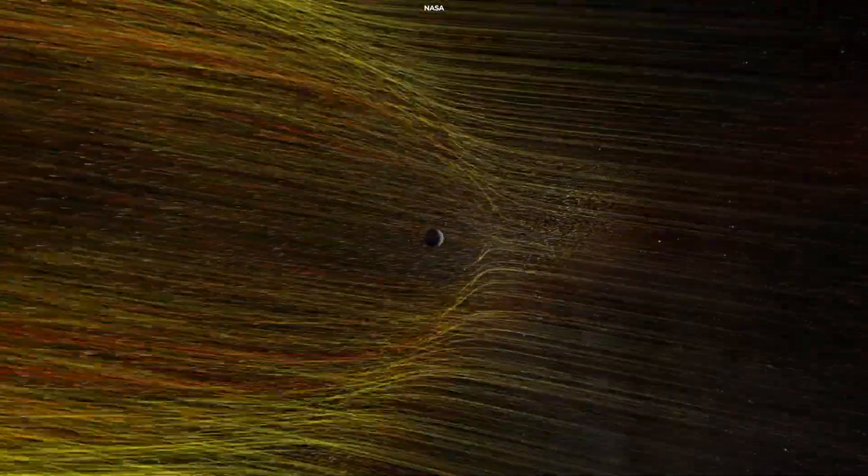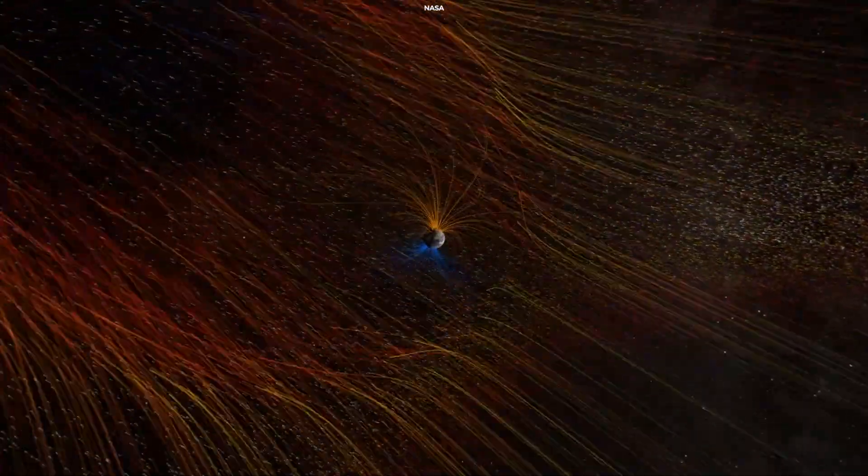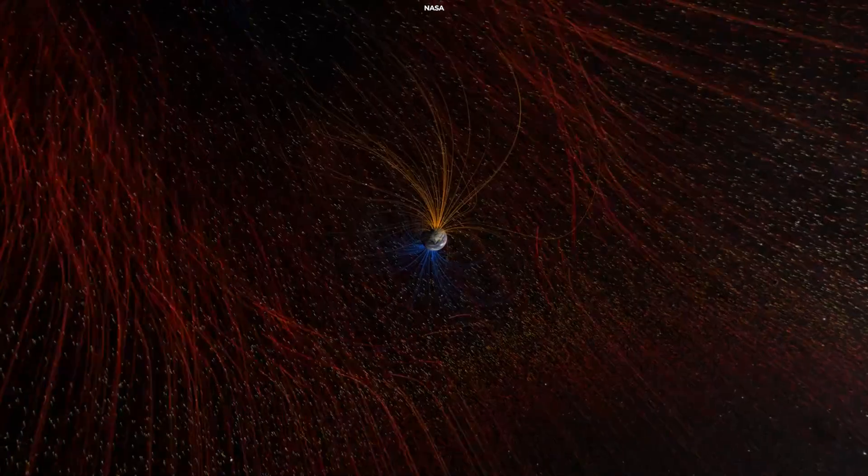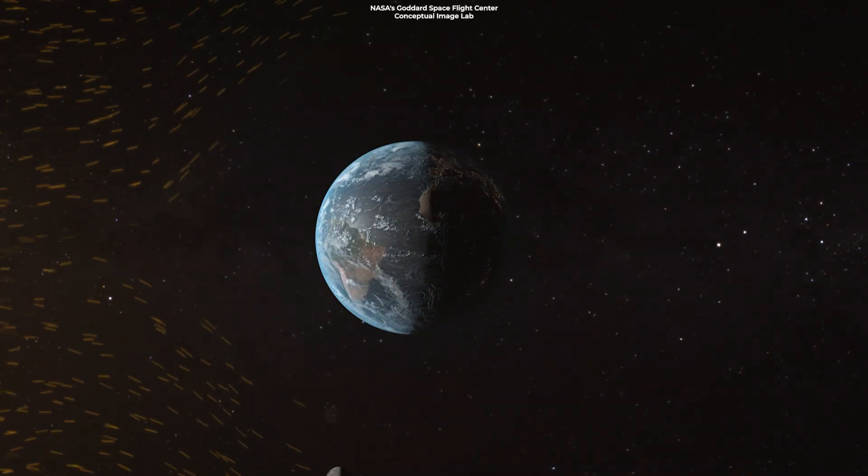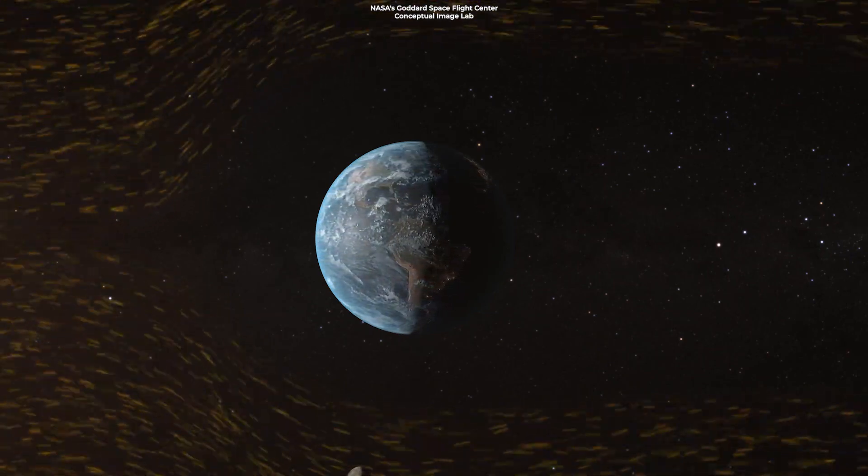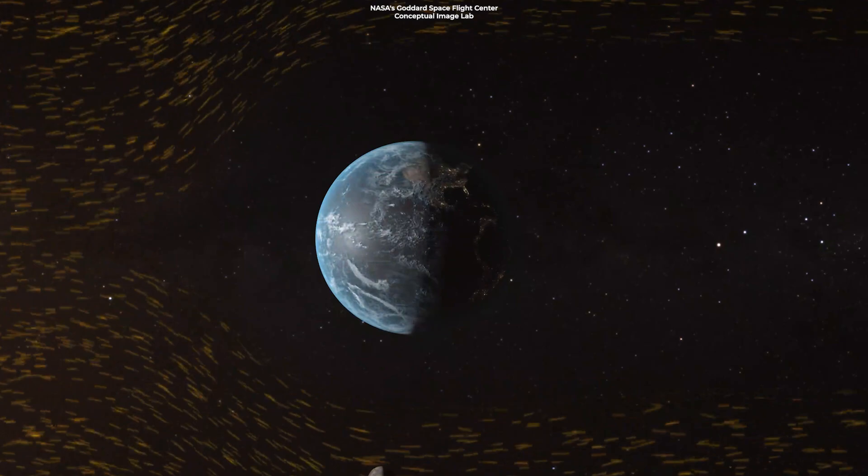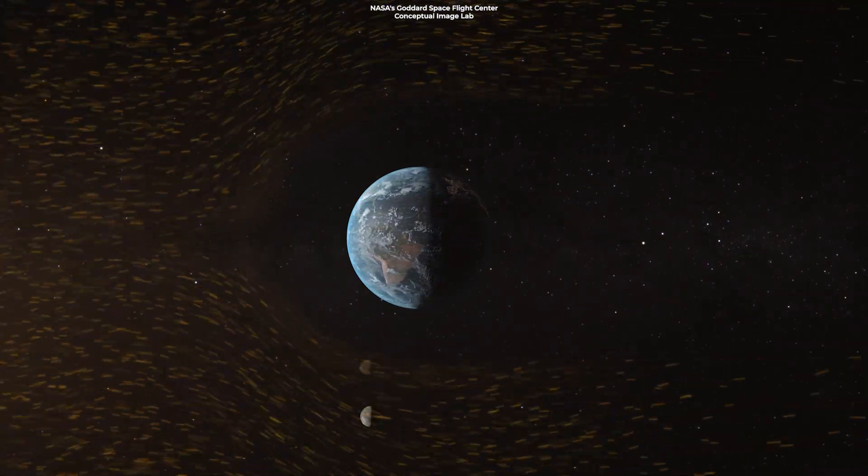Earth's magnetic field and its immediate space environment interact with the solar wind, which consists of charged particles traveling at about 900,000 miles per hour. And just like Earth, there are interactions between HAT-P-11b's magnetic field and its immediate space environment with the solar wind from its host star. And those are very complex.